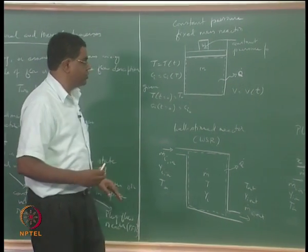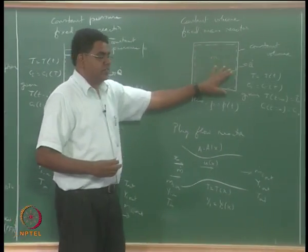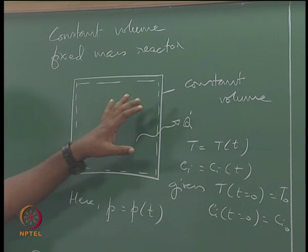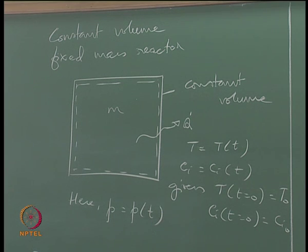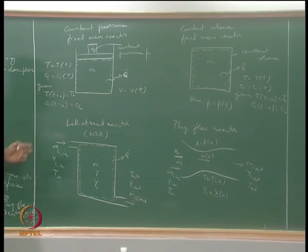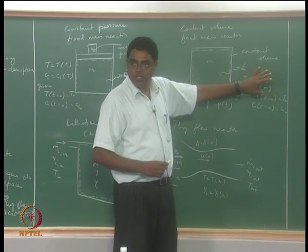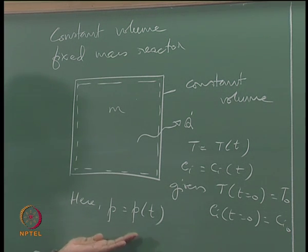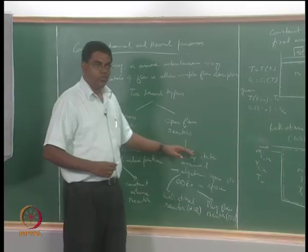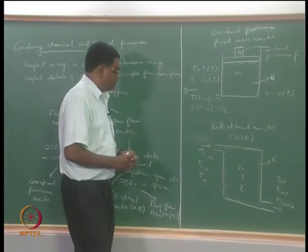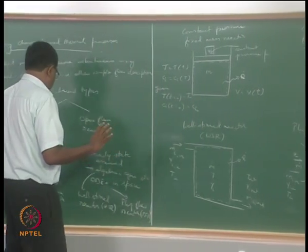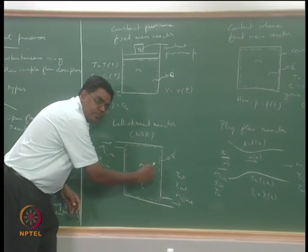In the constant volume fixed mass reactor, the volume is fixed so pressure changes in time. The problem is posed similarly to the constant pressure case — the same ODE structure — except we keep volume fixed rather than pressure fixed, and as an offshoot we can find how pressure changes in time. For open flow reactors, the well-stirred reactor has a lot of internal flow that we do not want to model spatially.